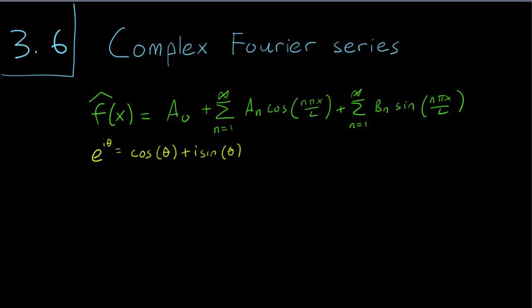The reason that this is useful is that this also allows us to write down cosine and sine in terms of exponential functions. These relationships are traditionally written as cos(θ) = (e^(iθ) + e^(-iθ))/2, and sin(θ) = (e^(iθ) - e^(-iθ))/(2i).